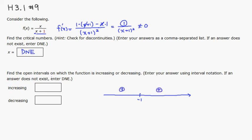So which means that it's increasing on the interval from negative infinity to negative 1, and also negative 1 to positive infinity. But it's never decreasing, so it does not exist.